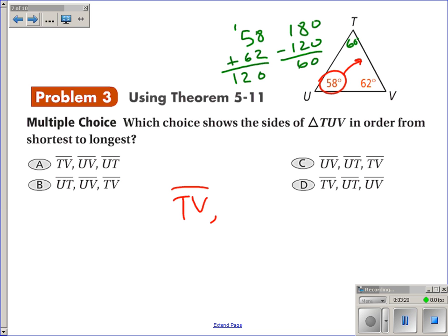In the middle would be 60 degrees, and so opposite it would be the middle side, UV, which leaves the largest angle across from the largest side, TU, or UT.